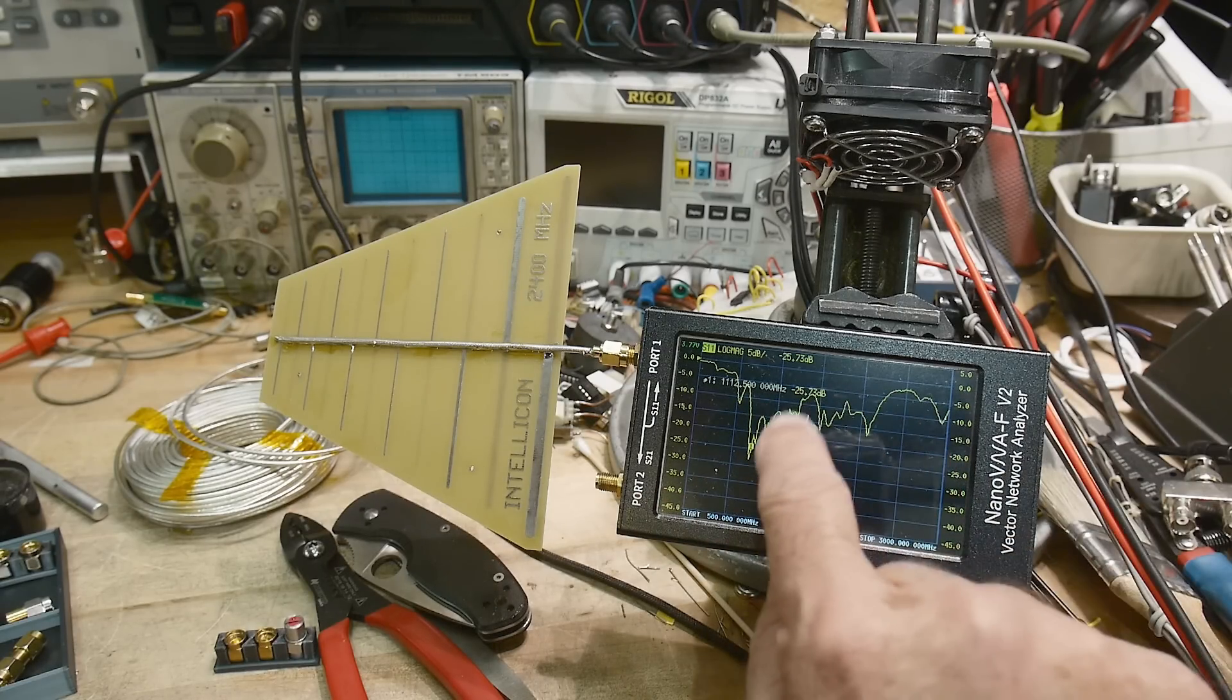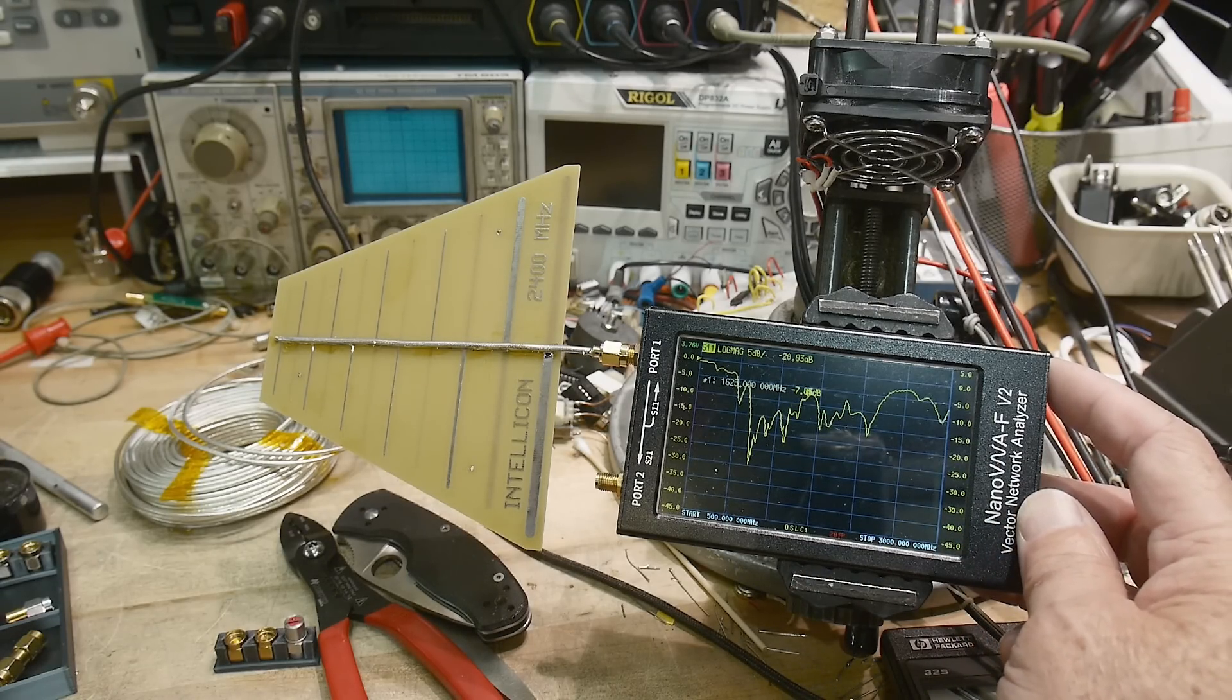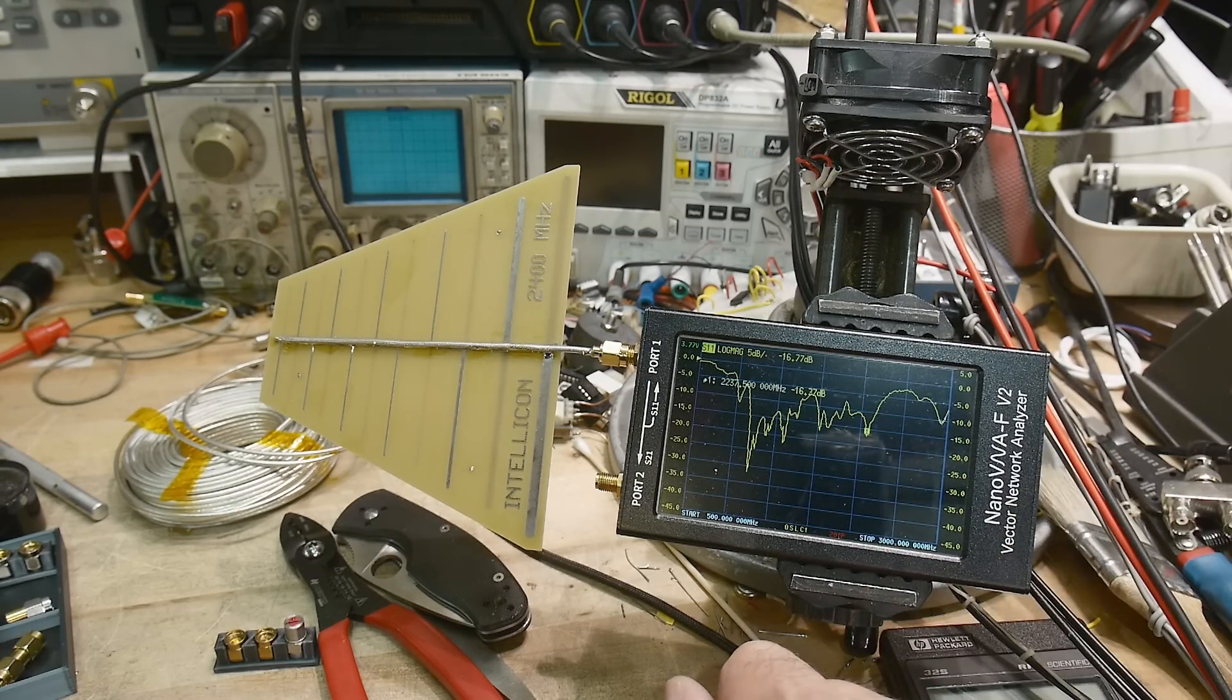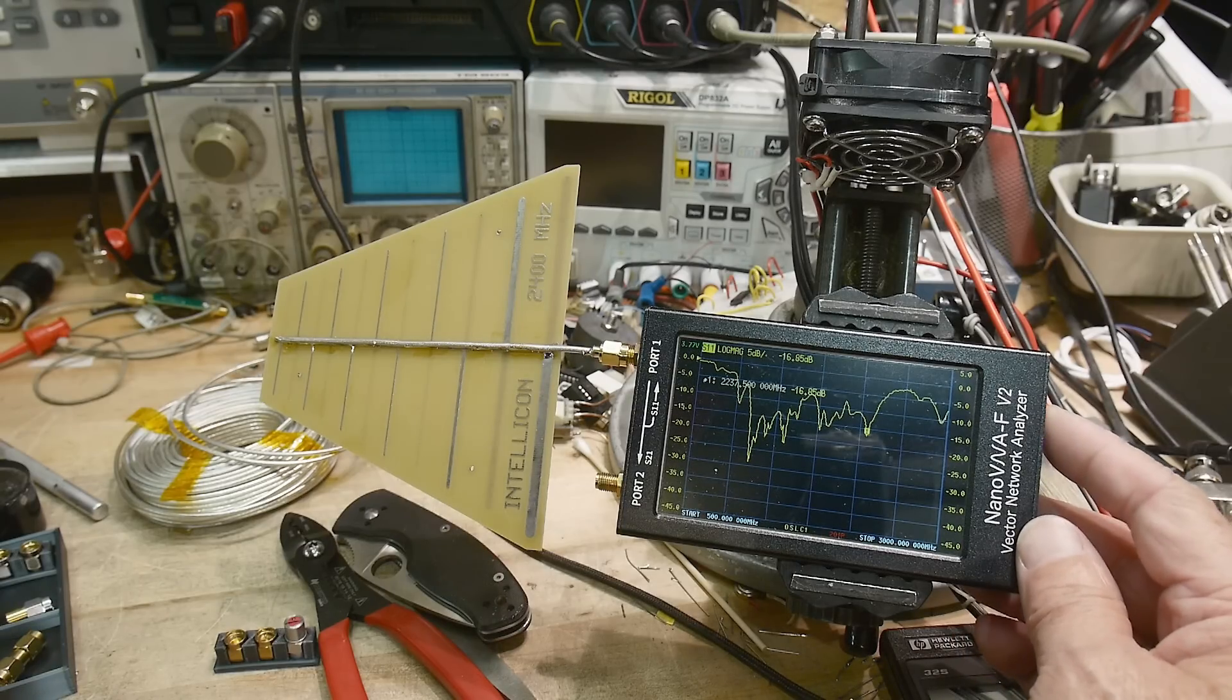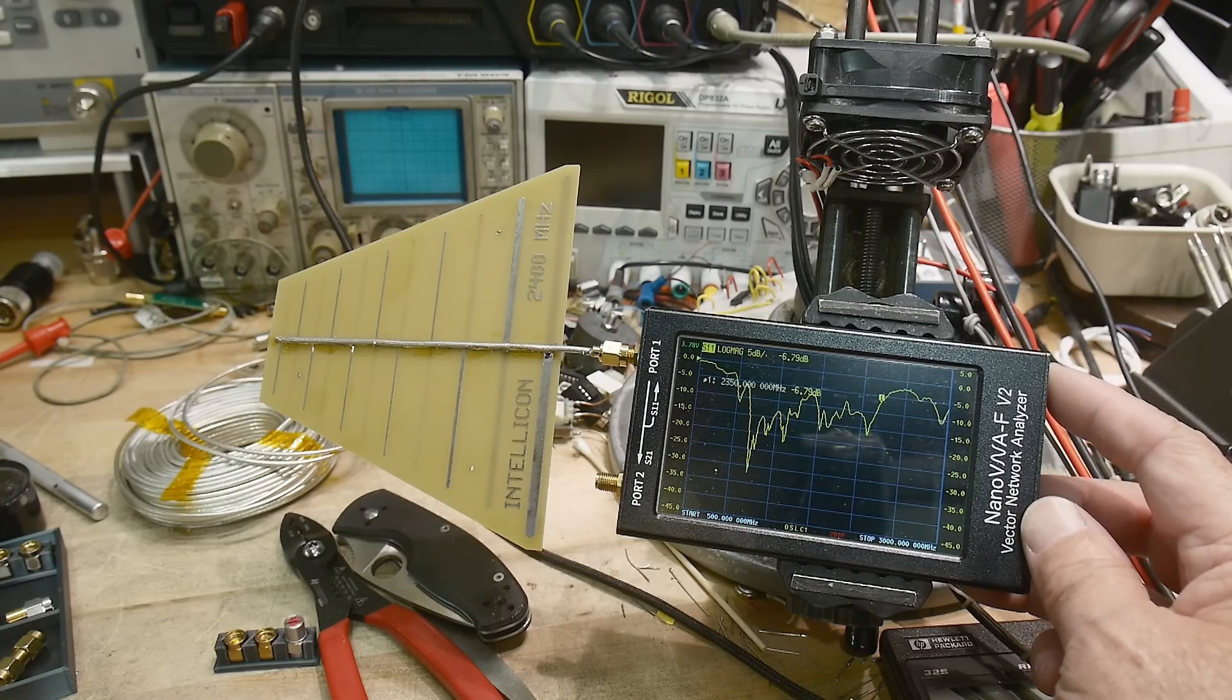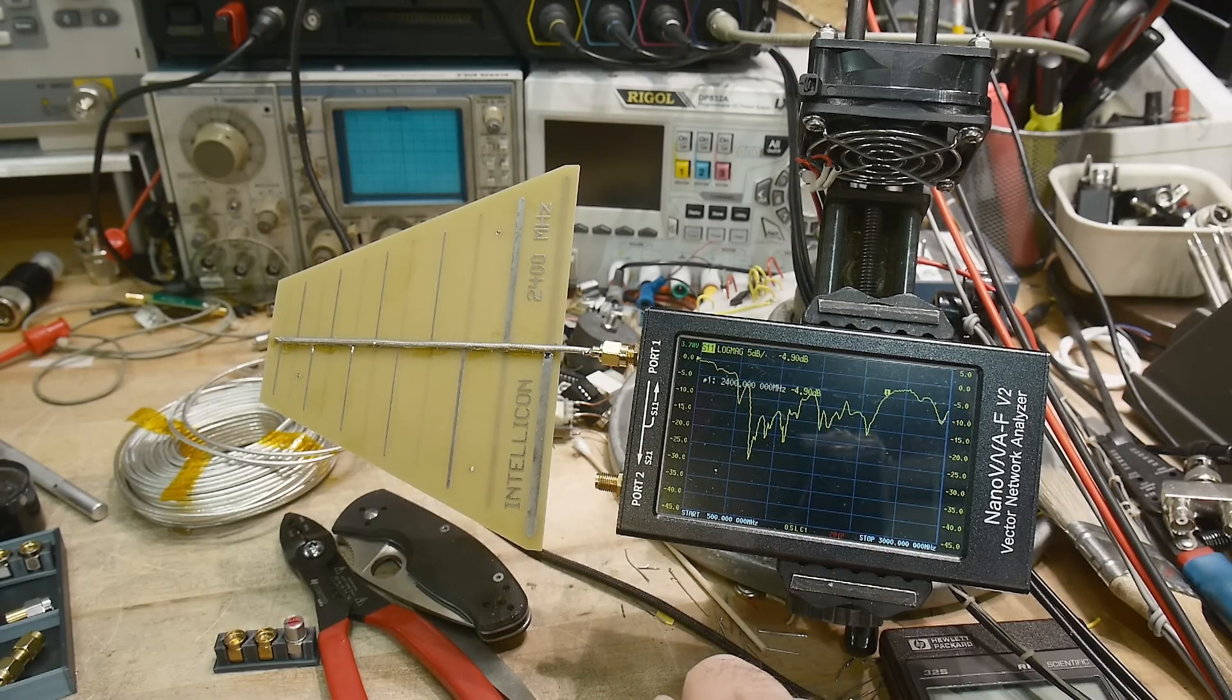We're getting a really big dip around 1112, and it's fairly broadband. It's kind of got an ugly right here around 1600. And then it's got a dip over here right around 2237. It says it's 2400, so let's put it at 2400. 2400 is about right there. So I would say no, it's not 2400, it's 2300 and below.